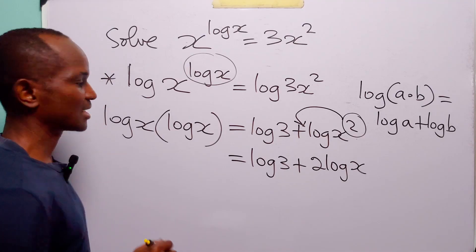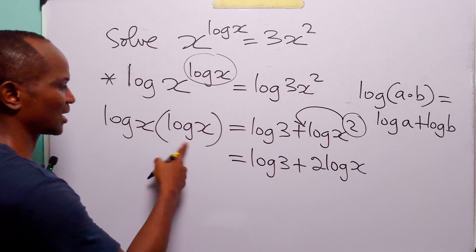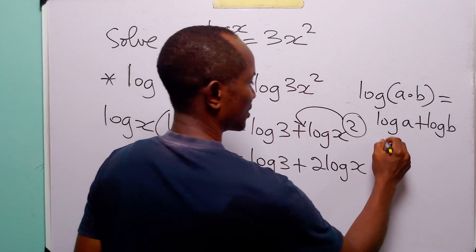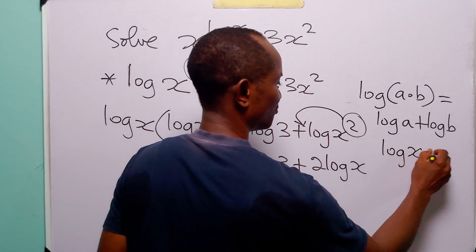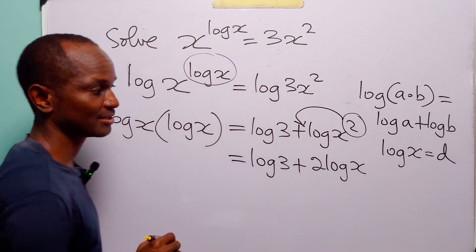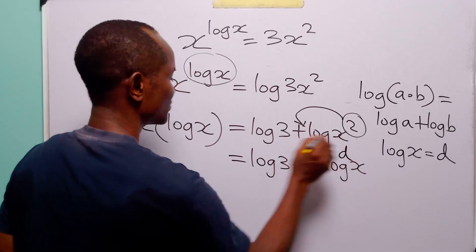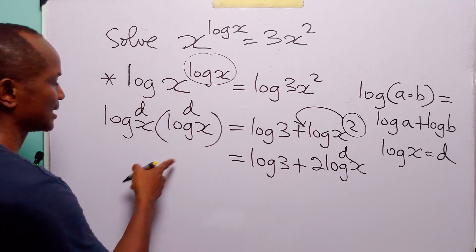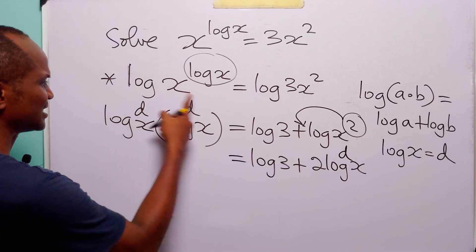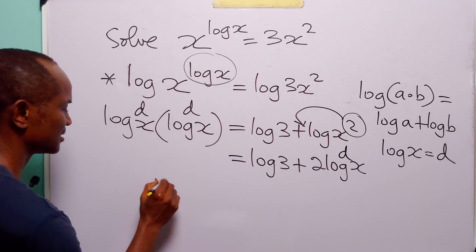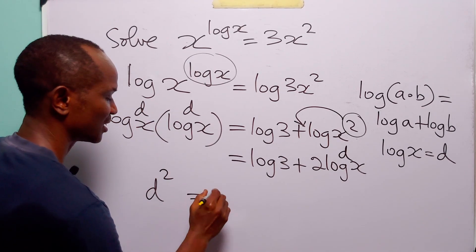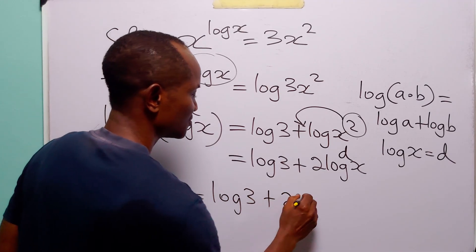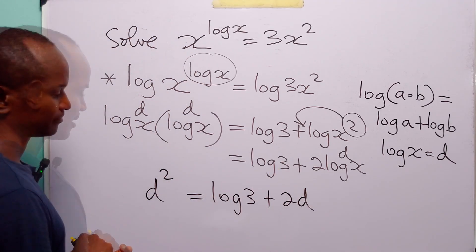Now you can see that we have log x appearing on both sides. So let log x equal the letter d. We replace every instance of log x with d. On the left hand side we get d times d, which is d squared, and this equals log 3 + 2d.